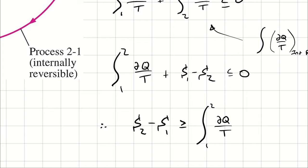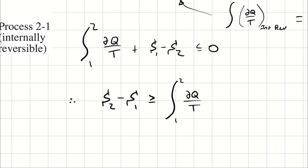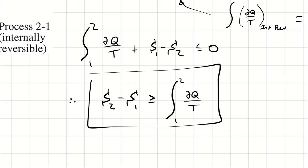Now I can say the integral from one to two of δQ/T plus S1 minus S2 must be less than or equal to zero. If I bring S1 minus S2 to the other side, I end up with the integral from one to two of δQ/T ≤ S2 minus S1, because it appears on the other side as negative S1 minus S2, which equals S2 minus S1. Therefore, S2 minus S1 must be greater than or equal to the integral from one to two of δQ/T — meaning the change in entropy is only going to be the lowest possible value if that process is internally reversible. For everything else, the change in entropy must be greater than that.